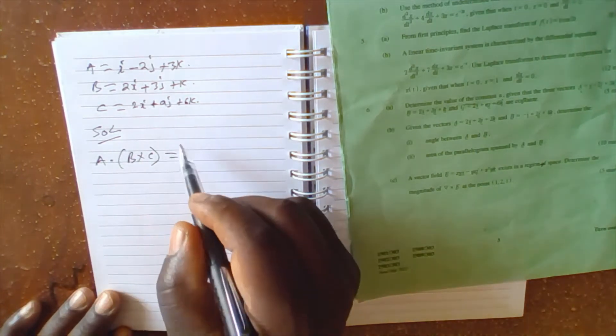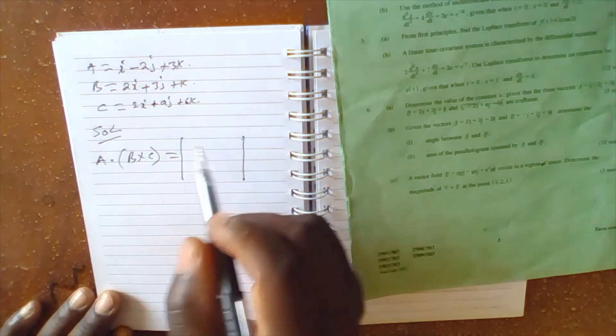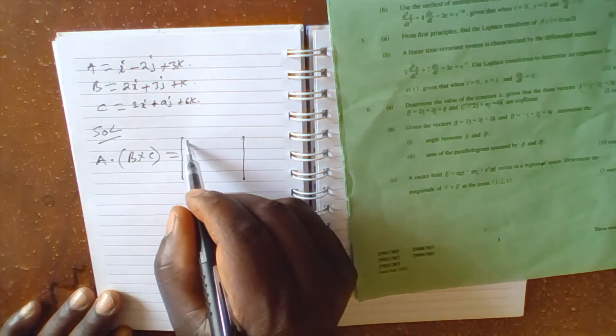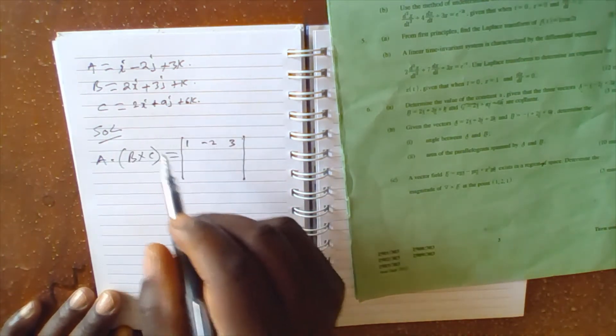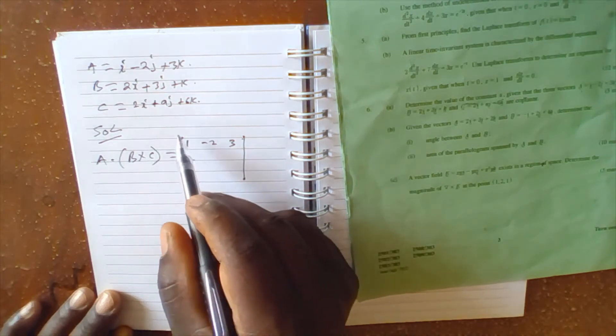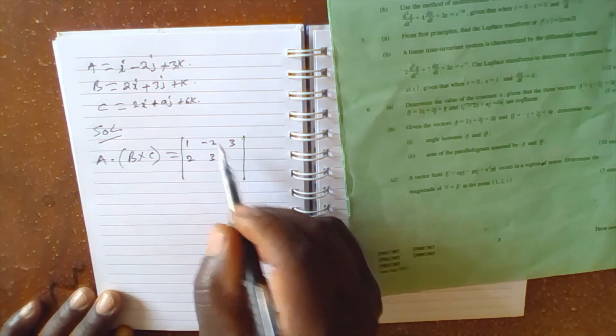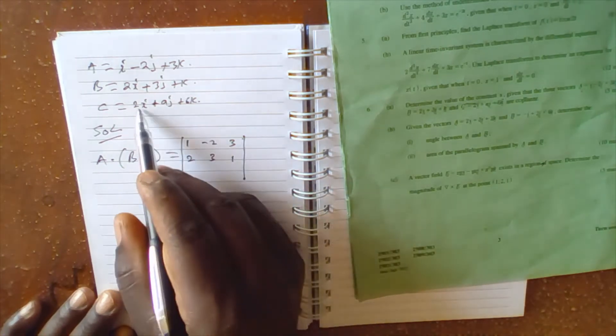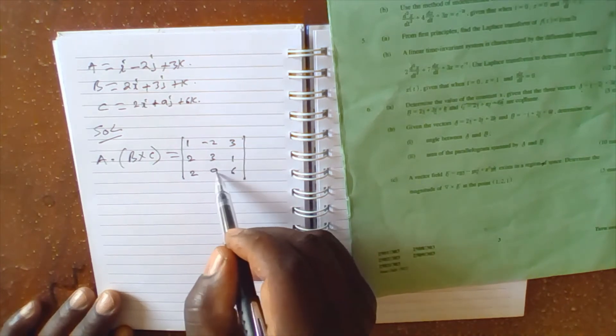This equals to... we write the values of A. Here we have 1, negative 2, 3. For B we have 2, 3, 1. For C: 2, a, and 6.